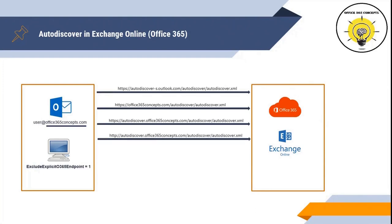The next Autodiscover lookup is the HTTP redirect. Outlook sends a request to http://autodiscover.domain.com/autodiscover/autodiscover.xml. Even if Outlook finds the XML file at this URL, it will ignore the response because it is sent over HTTP, which is a non-secured channel.